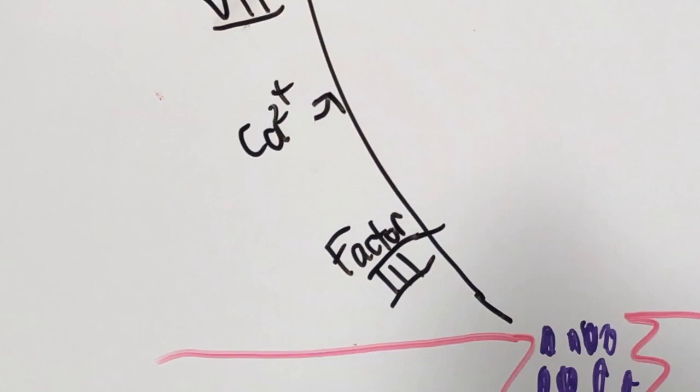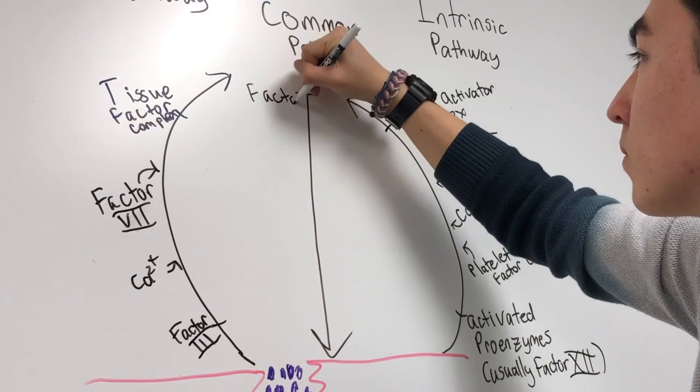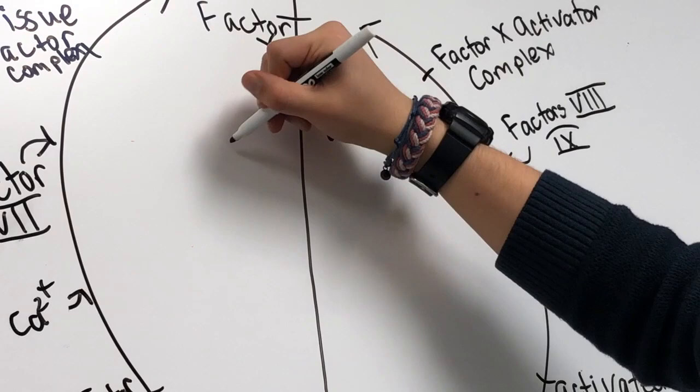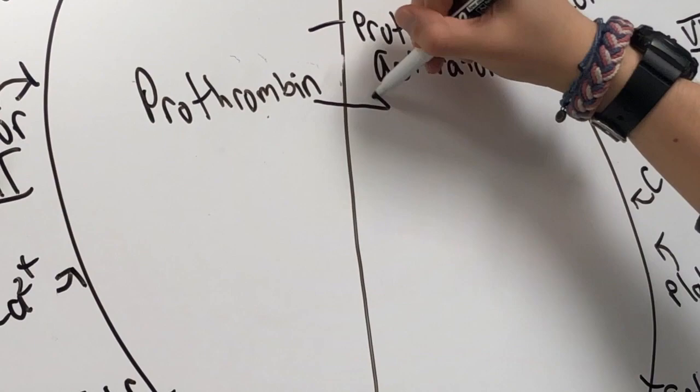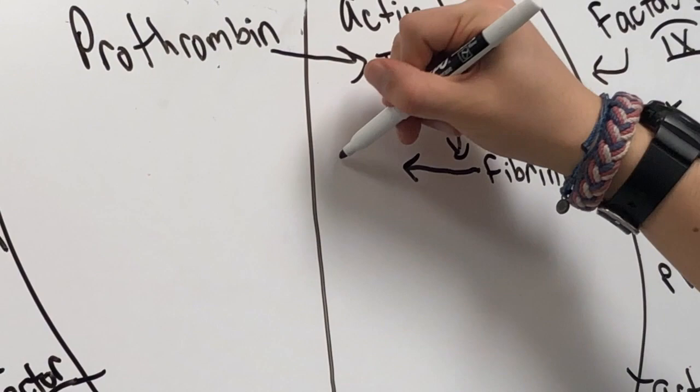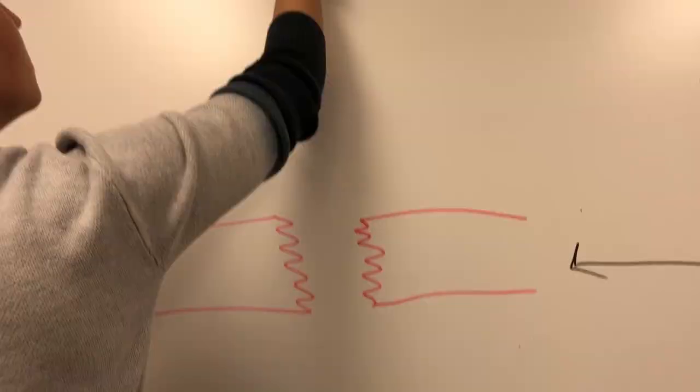The common pathway is activated by the complexes made by both the extrinsic and intrinsic pathways. Both these pathways form a complex to activate factor 10. Once factor 10 is activated, it signals the prothrombin activator to convert prothrombin to thrombin. Thrombin then converts fibrinogen into fibrin, which intertwines with the platelets, forming the final blood clot.